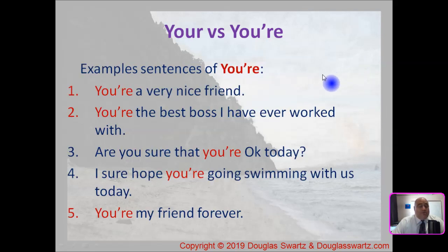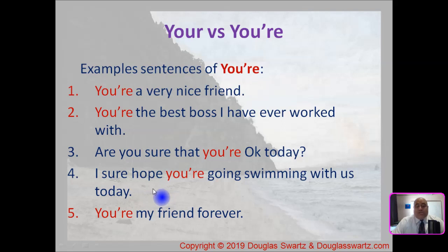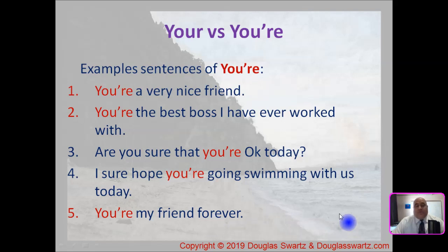Example sentences of the contraction you're. Number one: You're a very nice friend — you are a very nice friend. Number two: You're the best boss I have ever worked with — you are the best boss I have ever worked with. Number three: Are you sure that you're okay today? Number four: I sure hope you're going swimming with us today. Number five: You're my friend forever — you are my friend forever.